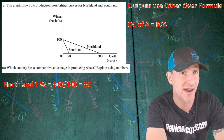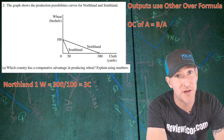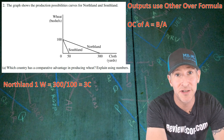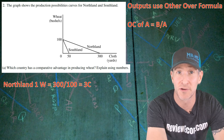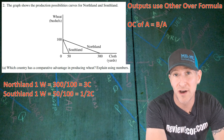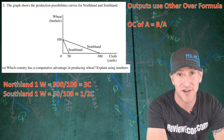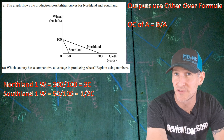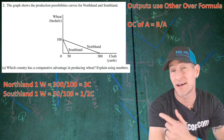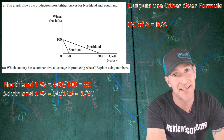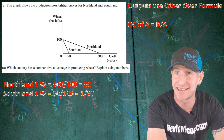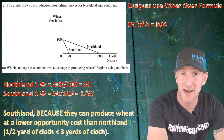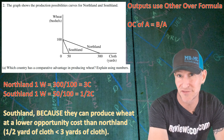First, with Northland, the opportunity cost of producing one unit of wheat will be the numbers we have for cloth, 300, divided by the numbers we have for wheat — that is three units of cloth lost for every bushel of wheat Northland makes. For Southland, the opportunity cost of one bushel of wheat is 50 (the numbers for cloth) divided by 100 (the numbers for wheat), which equals one-half yard of cloth per bushel. Southland has the lower opportunity cost because one-half is less than three. Southland produces wheat at a lower opportunity cost: one-half a yard of cloth is less than three yards of cloth. That gets you your first point.